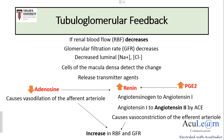Vasodilation of the afferent arteriole (via decreased adenosine) and vasoconstriction of the efferent arteriole (via angiotensin 2) together cause an increase in renal blood flow and GFR. This is how the tubuloglomerular feedback mechanism maintains renal blood flow and GFR when mean blood pressure fluctuates between 80 and 180 mmHg.